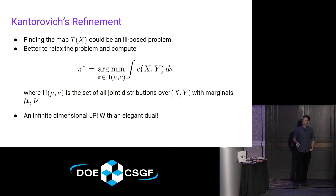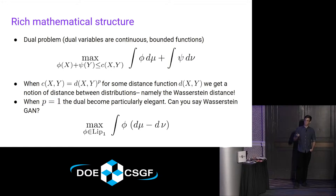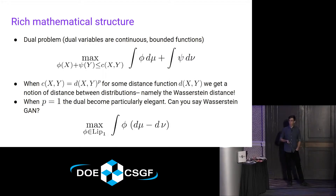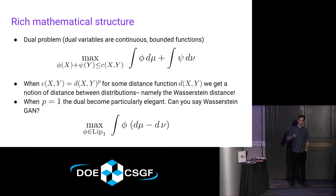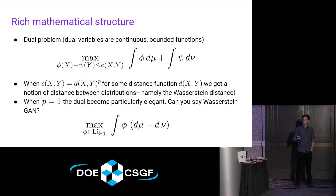When this cost is a power of a distance function, the value of the minimizer actually gives you a distance — these are called Wasserstein distances, and you may have heard of these before. In the case where p equals 1, you get a lot of simplification, and the dual is just maximizing over Lipschitz functions of the integral of the difference between the two measures. This is essentially the problem that a Wasserstein GAN solves — a Wasserstein GAN replaces phi with a neural network and replaces the difference between distributions with a difference between an empirical measure and a neural network.